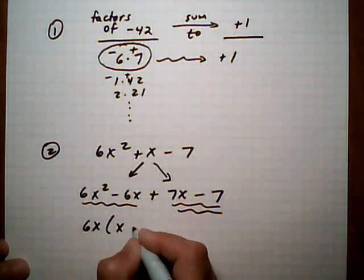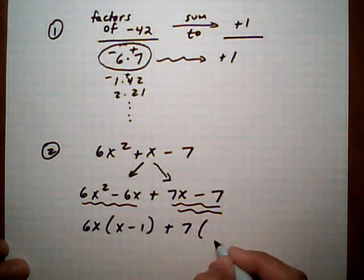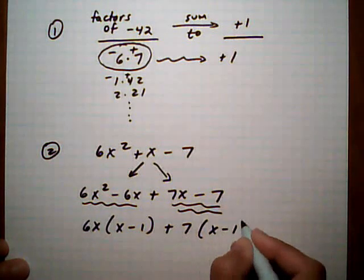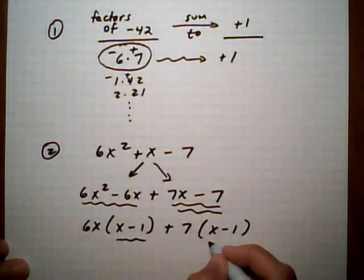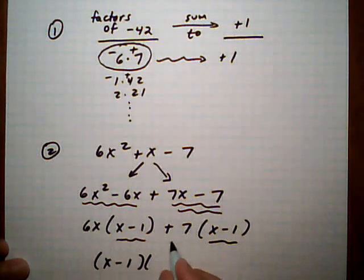And we're left with x take away 1. From the next one, we want to take out a 7, and we're left with x take away 1 again, which is what we want because that gives us a common binomial. Pull out the common binomial. Leftover is 6x plus 7.